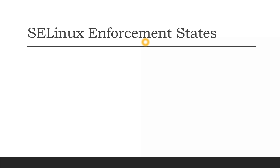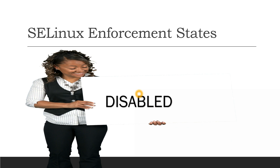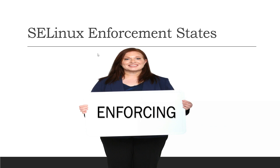Now we'll look at the different SELinux enforcement states. There are three states. The first one is the Disabled state. In this state, the SELinux policy is not enabled — no security checks will happen. Any random person can access any file. However, this disabled state has been deprecated from Android 8 and onwards, since the focus is on securing user data.